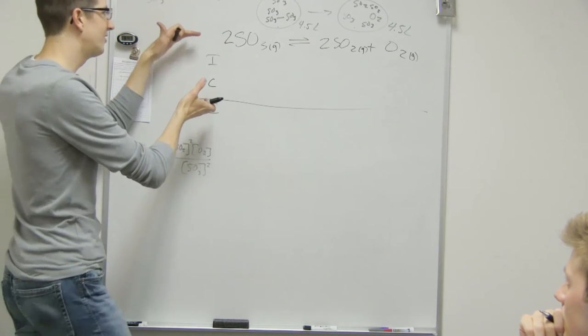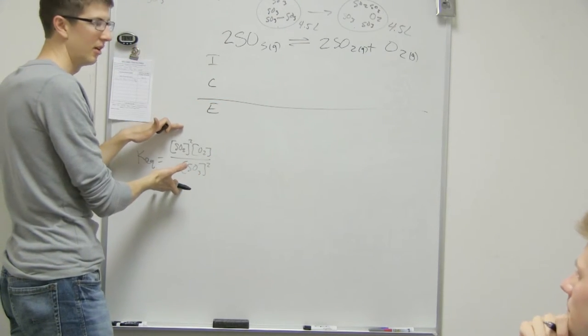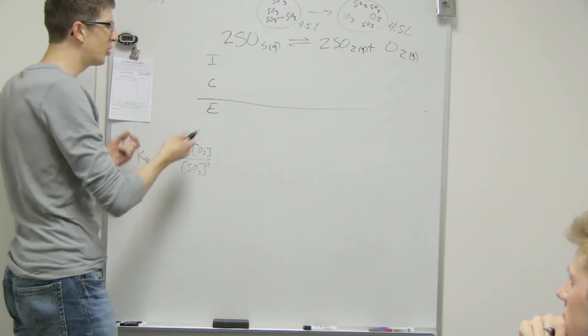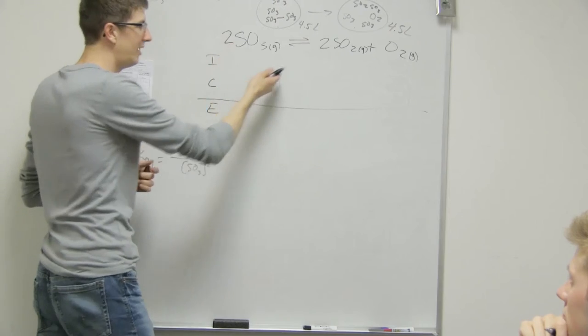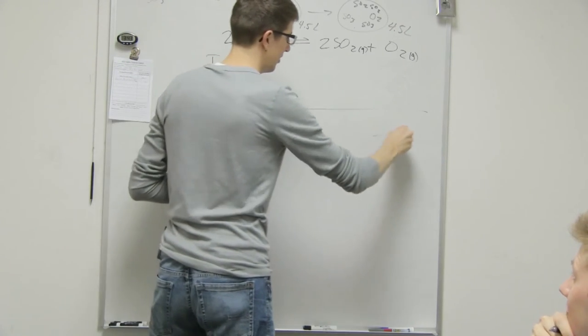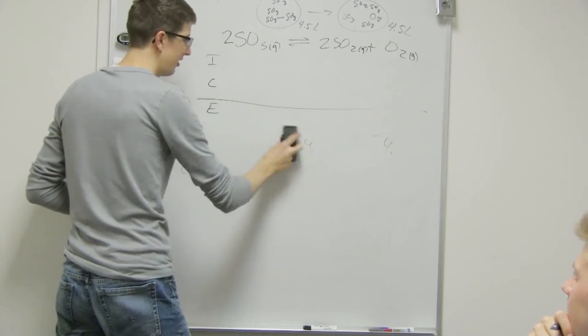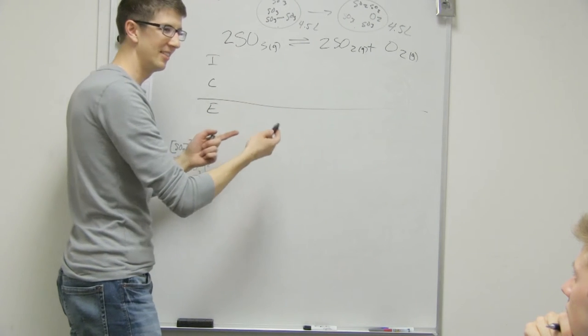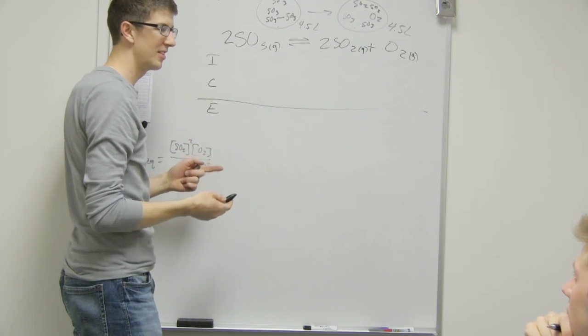So we have 0.9 moles. In order to eventually use the equilibrium constant expression, which is why we use the ICE table, because this conveniently sets it up to where we can plug it into this, it's better to use molarity. I mean, it's just that simple. And you could leave it as moles, like 0.9, but when you get to the end you'd have to put everything over 4.5 and you'd have to divide your numbers, but we'd be having x's and all that kind of crazy stuff. So just do it first.